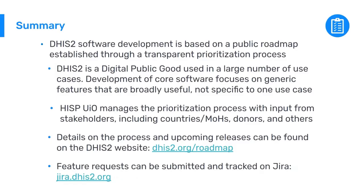In conclusion, DHIS2 software development is based on a public roadmap established through a transparent prioritization process. DHIS2 is a digital public good used in a large number of use cases, with core development focused on generic features broadly useful across implementations, not specific to a single use case. The HISP center at the University of Oslo manages the prioritization process with input from stakeholders including countries, ministries of health, donors, and others. Details can be found at dhis2.org and dhis2.org/roadmap, and feature requests can be submitted and tracked on Jira.